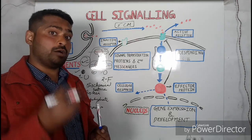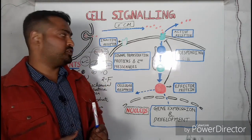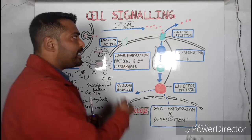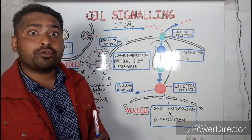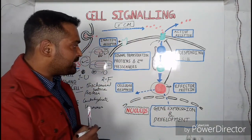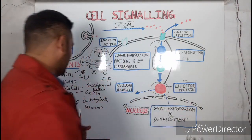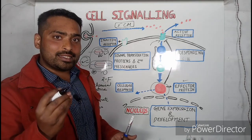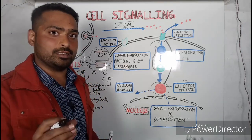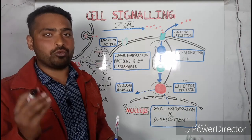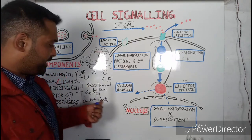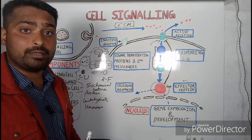The next component is the second messengers — the components which come secondary in this signaling pathway. The function of these second messengers is to take up the message from the receptors and deliver it to the main and final component of the signaling pathway, which is known as the effector molecule. The effector molecule is the main protein that actually gives the result — 'effector' means the one which gives effect.